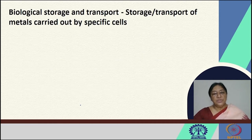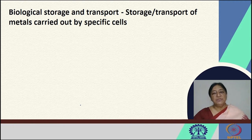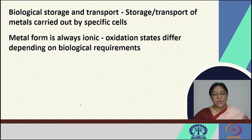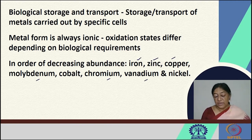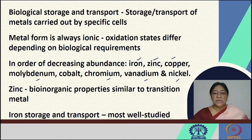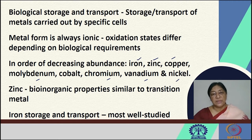Looking at the storage and transport of metals carried out by specific cells, the metal ions are always ionic in nature and the oxidation states differ depending on biological requirements. In order of decreasing abundance, we have iron, zinc, copper, molybdenum, cobalt, chromium, vanadium, and nickel, in addition to some other trace elements. These are typically transition metals with differing oxidation states involved in specific redox reactions.